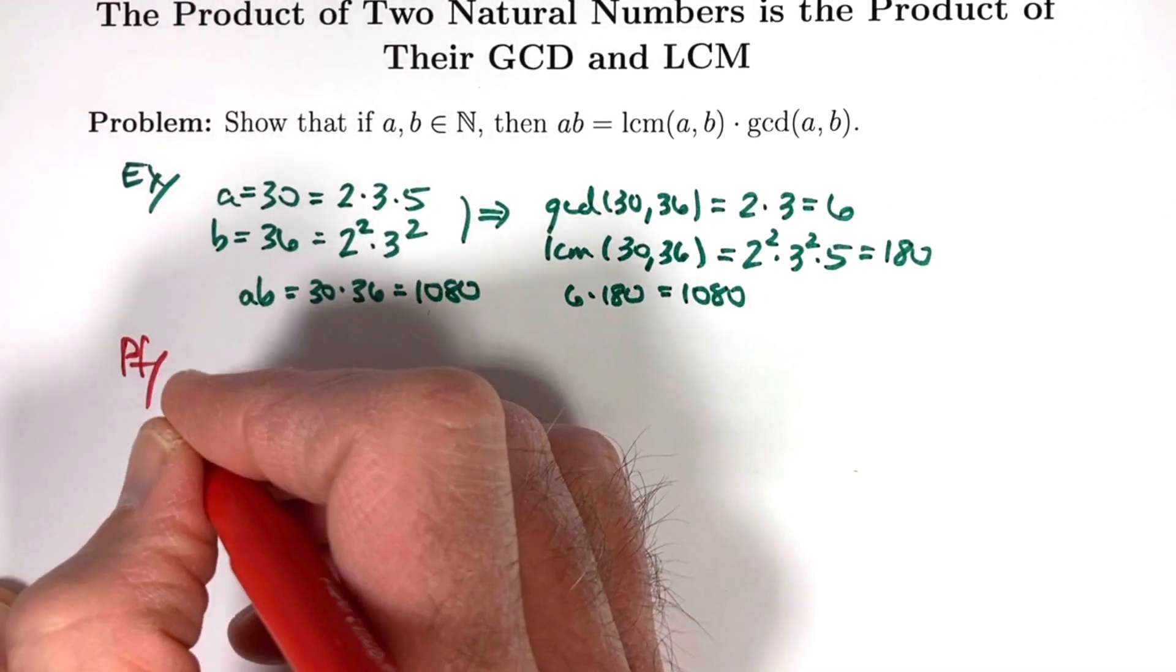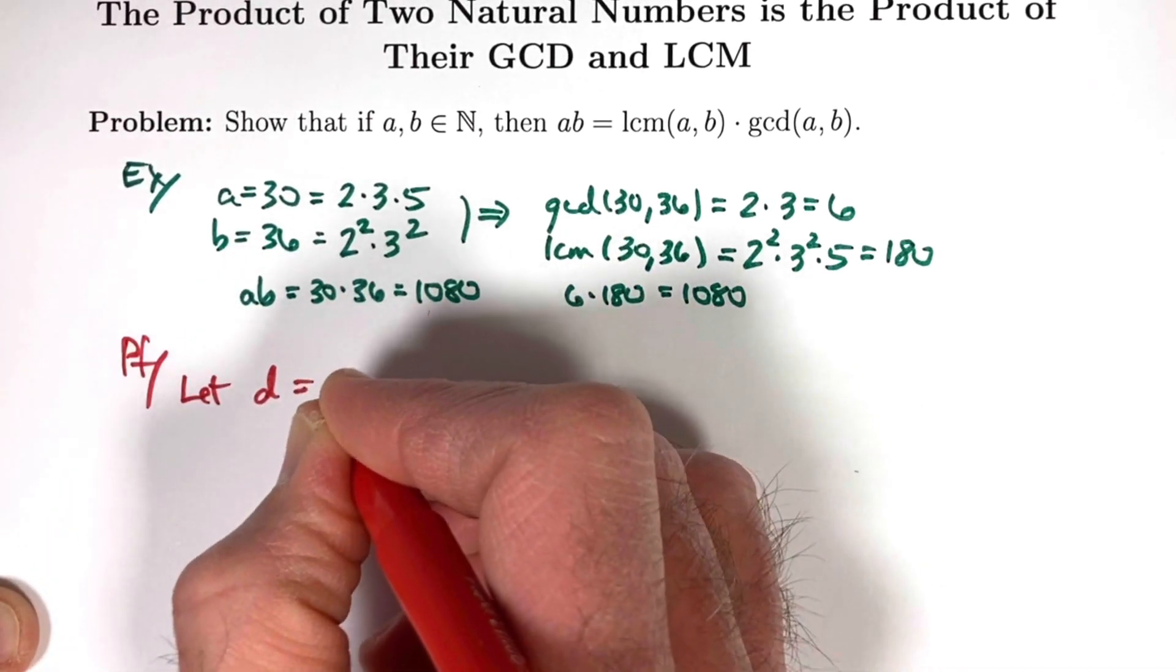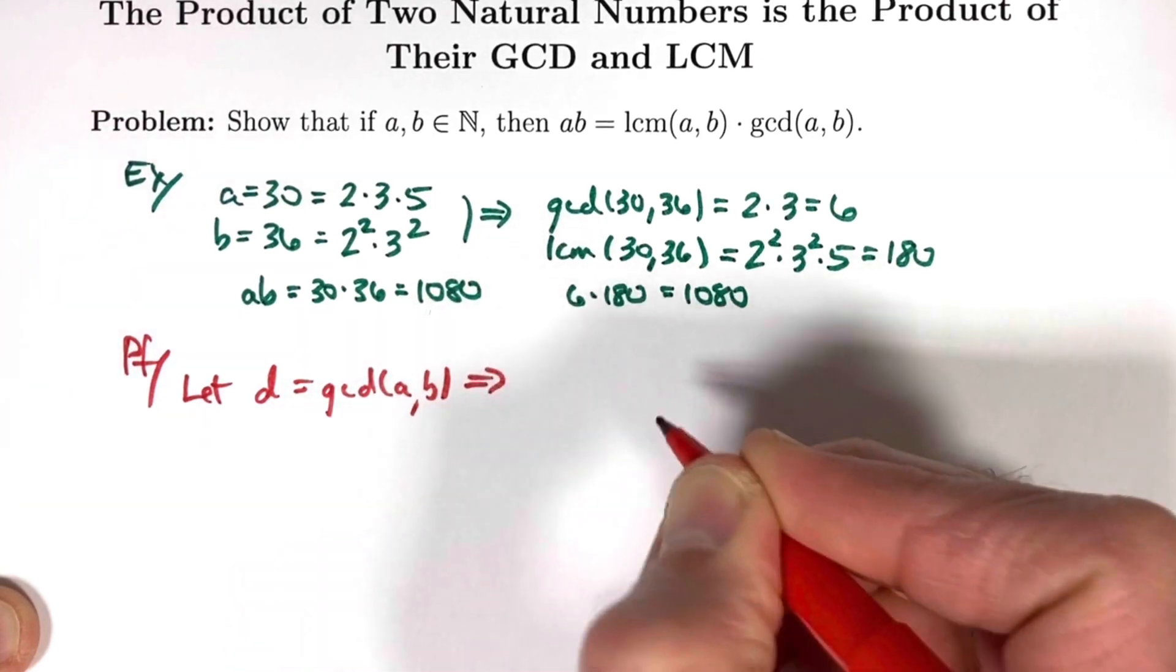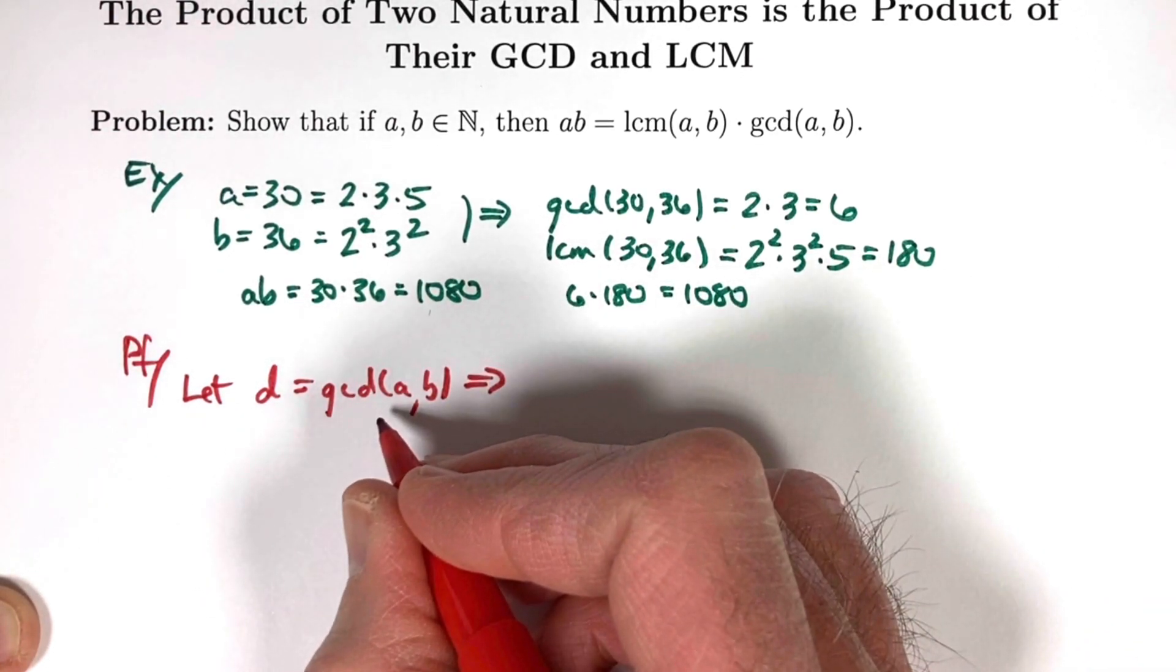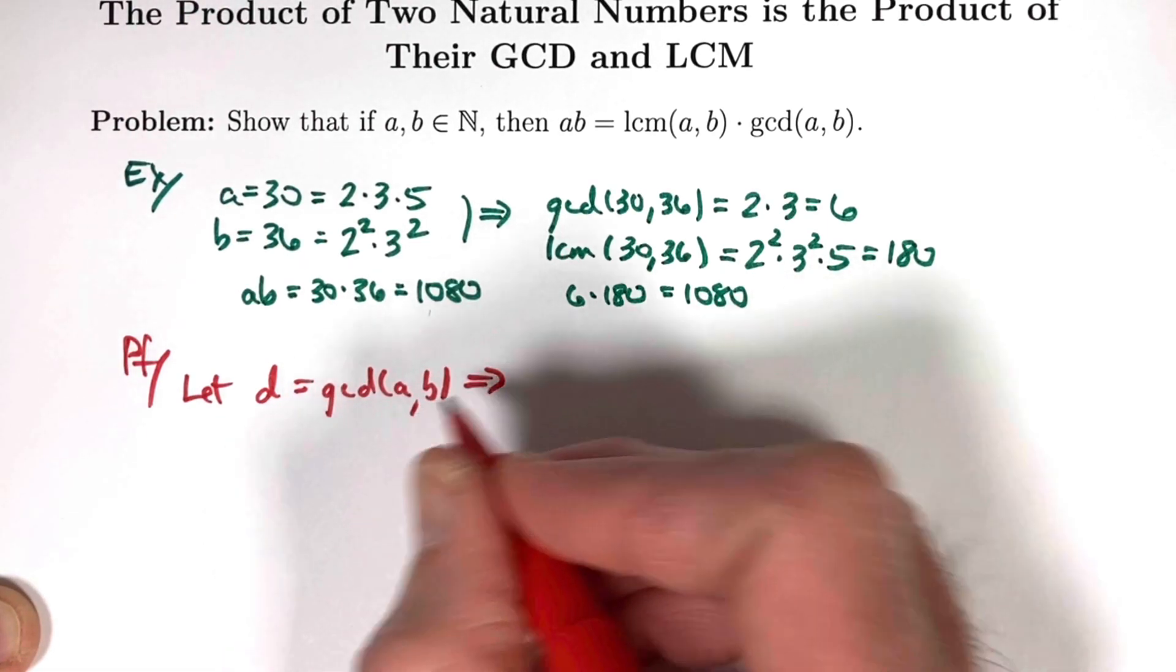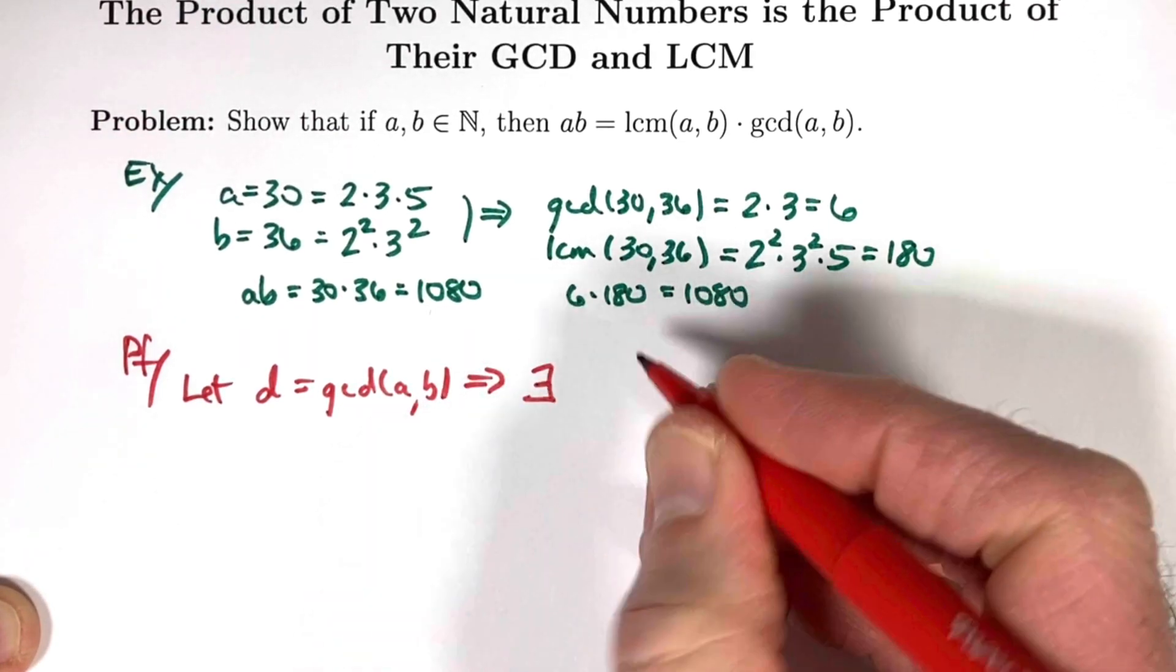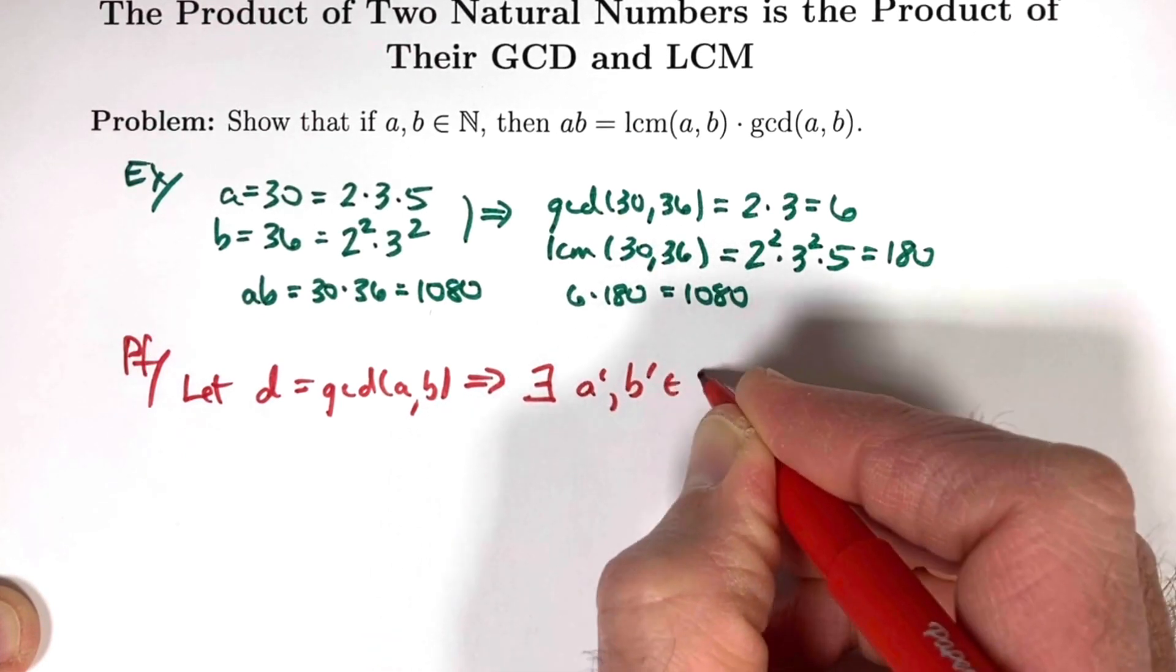Let's use some symbols to simplify our work. Let's start by letting D represent the GCD of A and B. What does that mean? D is the GCD, greatest common divisor. In other words, D divides both A and B, and it is the largest such divisor. So one thing this means is that there exists, backwards E means there exists, say an A' and a B' that are natural numbers...